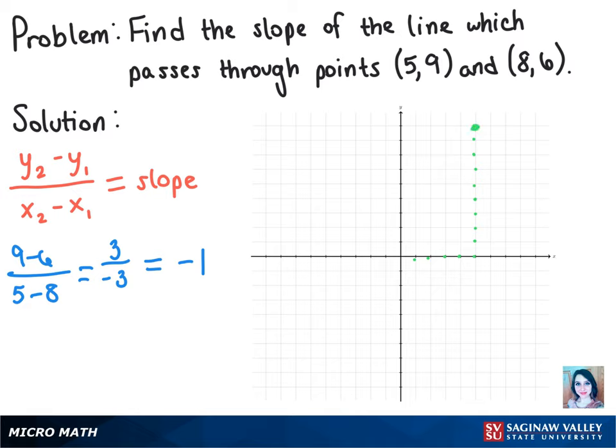And then we're going to move to the right on the x-axis 8 units, and then up 6 for our second point.